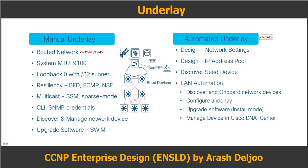Instead, you can use a logical fabric over the top of the underlay, which provides routing protocol benefits such as multi-path routing, fast convergence, and ease of management. When we design the underlay, we use the layer 3 network, and because of that we don't have STP, FHRP, VTP, or other layer 2 protocols.